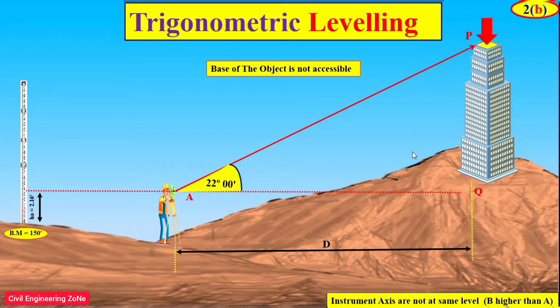In the first case, where the base is accessible, we use tangent theta directly to find the height. But in this case, the base distance is unknown.